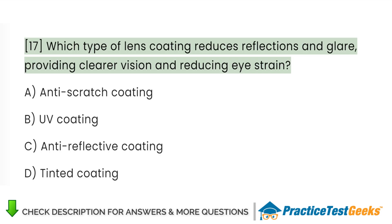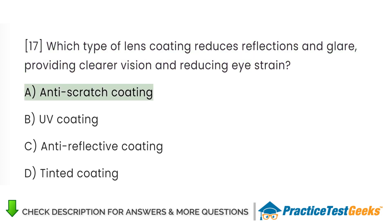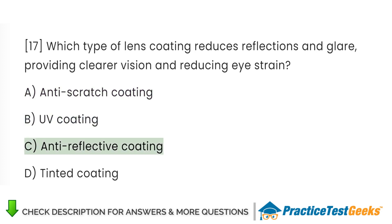Which type of lens coating reduces reflections and glare, providing clearer vision and reducing eye strain? A. Anti-scratch coating. B. UV coating. C. Anti-reflective coating. D. Tinted coating.